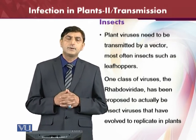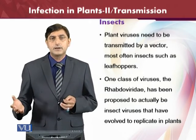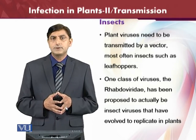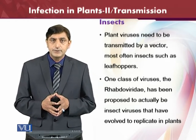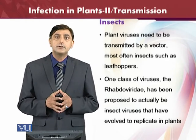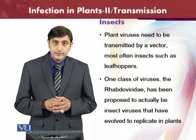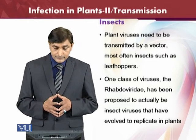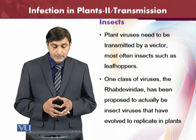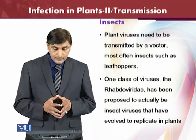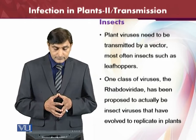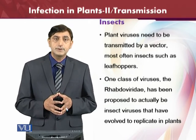Insects are the most common vectors for transmission of viruses from one plant to another. Since plants cannot move, insects serve as intermediate vectors. Some viruses have even evolved to replicate inside insects and then cause disease in plants. Plant viruses need to be transmitted by a vector, and among the most common vectors are insects and leafhoppers. The Rhabdoviridae, for example, are proposed to be insect viruses that can also replicate in plants.